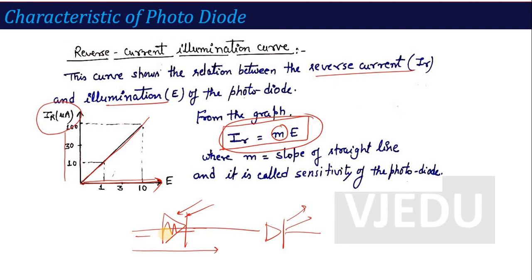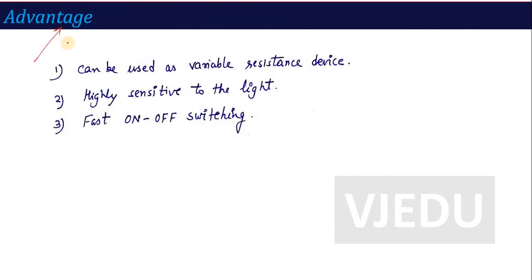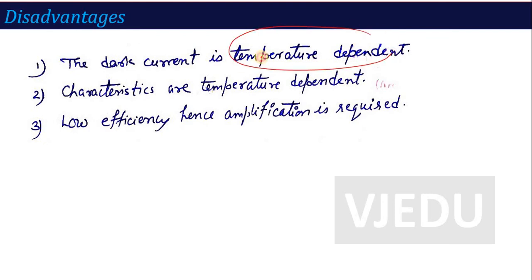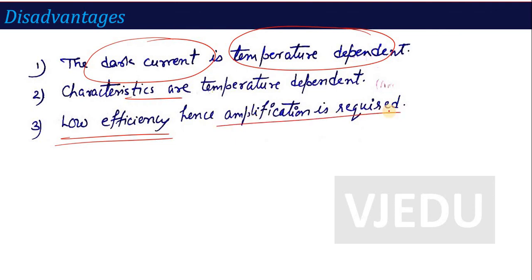This covers the operation and characteristics of photodiode. Regarding advantages: it can be used as a variable resistance, it is a highly sensitive light detector, and its on-off switching is very fast. Regarding disadvantages: there is temperature dependency affecting its characteristics and dark current, it has very low efficiency, and the reverse current produced is of very low value, so amplification is required.